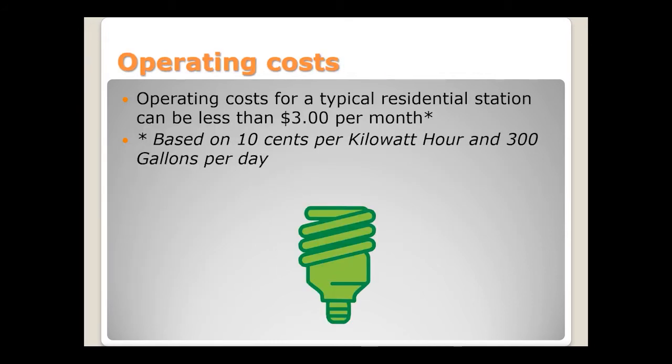The operating cost for a typical residential application is less than $3 a month. The pump does not run continuously — it typically runs eight to ten times a day. The basin fills up as the homeowner uses water, then the pump turns on to pump down the basin into the lateral line.